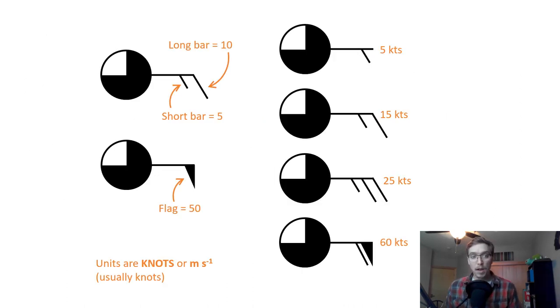That barb is in relation to the wind speed. So if it is a short bar, that means it is five units, oftentimes knots or meters per second squared, usually it's in knots though. If it is a long bar, that means 10 units. If there's a flag, that means 50. So you can kind of see on the right, that's how you would be reading this type of weather chart. So five knots on the top there, just that little tiny flag and barb; 15 in the middle; 25 because you've got two long barbs and a short barb; and then a flag with a long barb, that's 60 knots. So that one's pretty quick and easy.